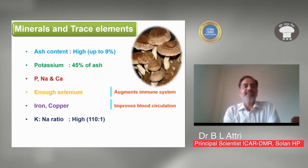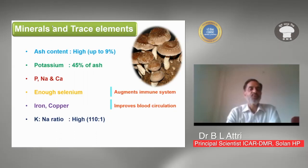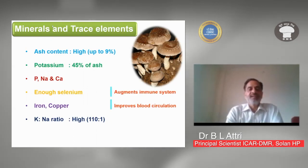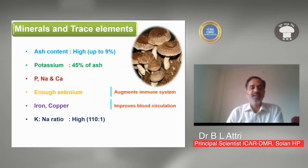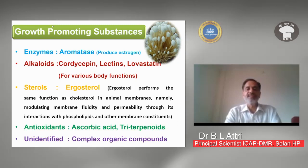The mineral and trace element content is high, with ash content up to 9%. Of that ash, 45% is potassium; phosphorus, sodium, and calcium are also available. Mushrooms are a good source of selenium, which boosts the immune system. Iron and copper improve blood circulation. The potassium-to-sodium ratio is very high — potassium is 110 while sodium is just 1. There are also enzymes, alkaloids like cordycepin, lectins, and lovastatin, which perform different functions in the body.